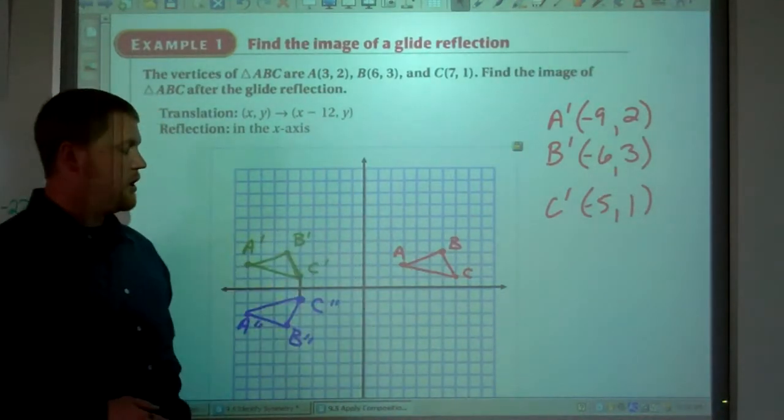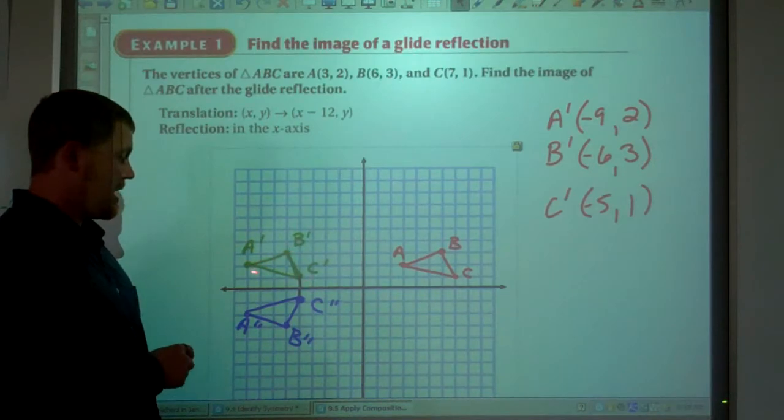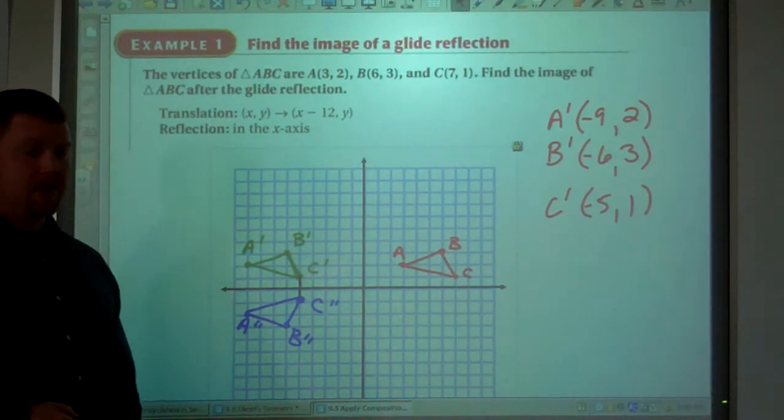You look at this triangle here, it's congruent to this triangle. If we look at the side lengths, they would be the same. Look at the side lengths here, they would still be the same.